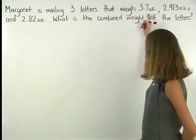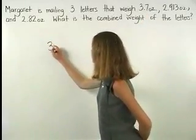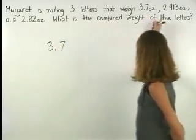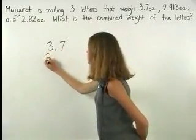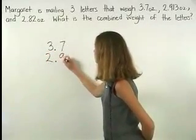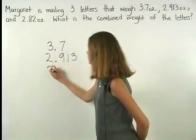of each number we have 3.7 plus 2.913 plus 2.82.